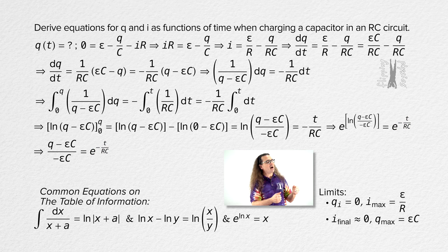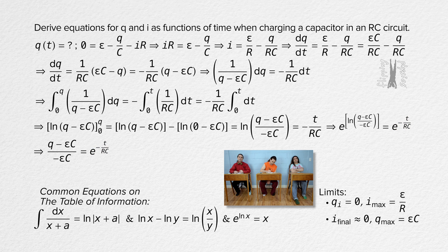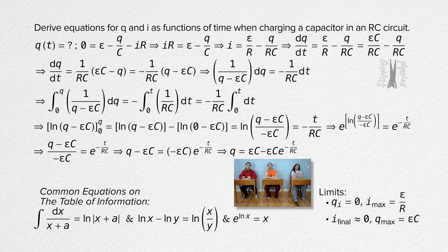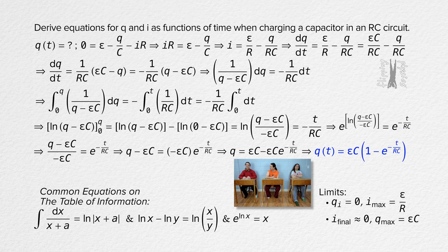We are solving for the charge on the capacitor as a function of time, so we multiply through by negative EMF times capacitance, then move EMF times capacitance to the right-hand side. Factoring out EMF times capacitance gives us the equation for charge as a function of time when charging a capacitor in an RC circuit.